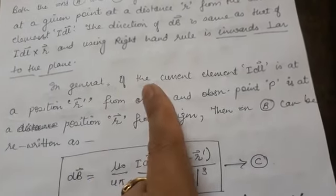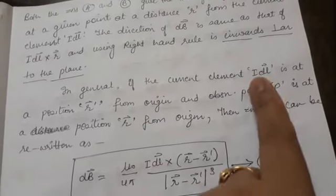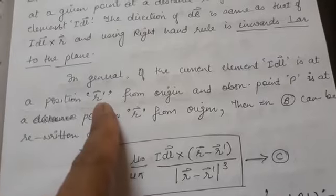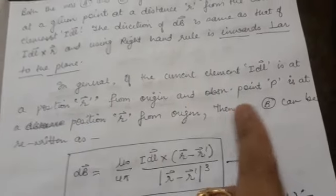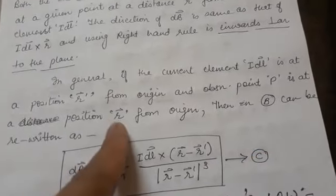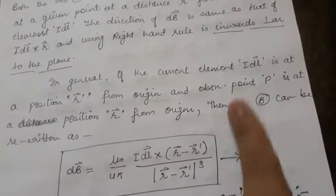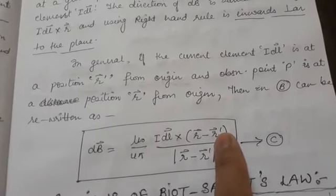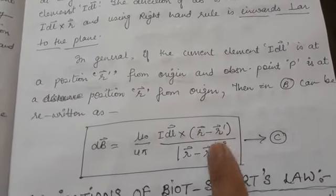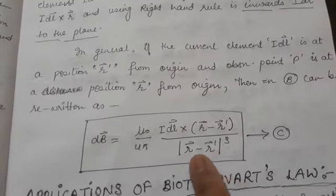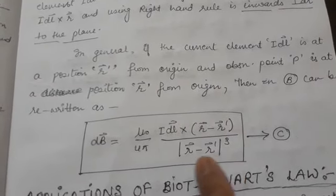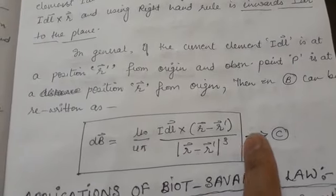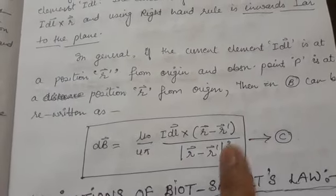To write equation A or B in general form, I consider an arbitrary origin O, where the current element IDL vector is at a position vector R-dash from the origin, and the observation point P is at a distance R vector from the origin. Then equation B is written with R vector minus R-dash vector in place of R vector, and the magnitude R cubed replaced by the magnitude of R minus R-dash cubed. This is the general expression for Biot-Savart's law.